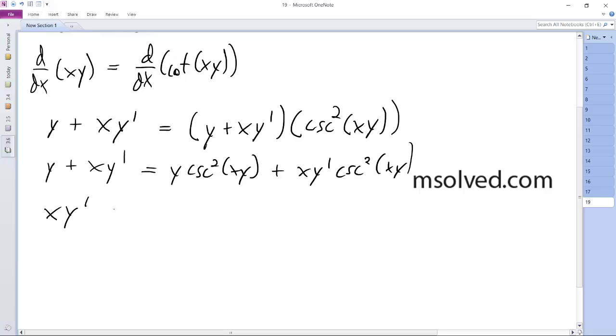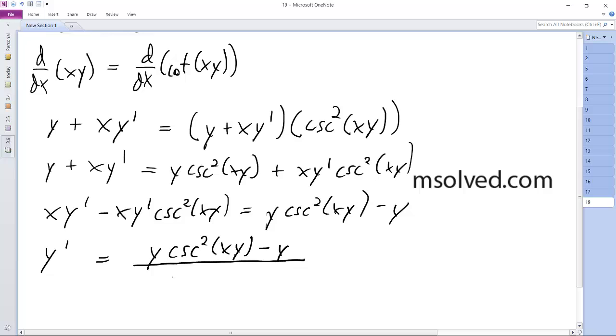xy prime minus xy prime cosecant squared xy. Okay, and we get y cosecant squared xy minus y, so then y prime is going to be equal to y cosecant squared xy minus y, and all this is over x minus x cosecant squared xy.